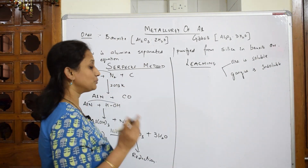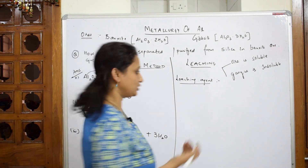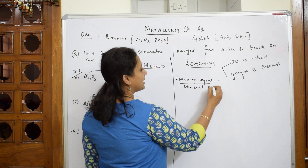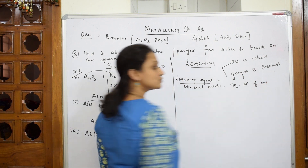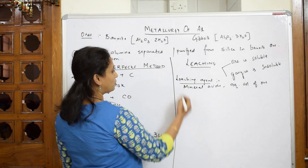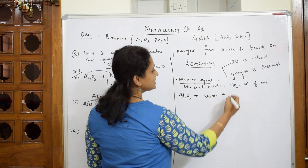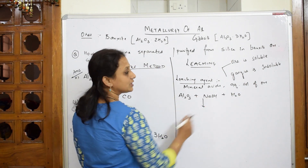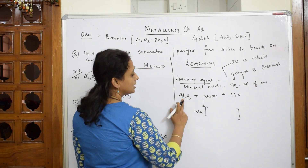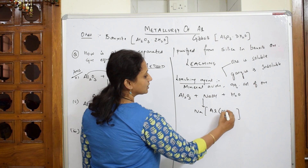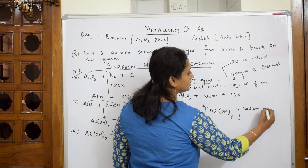For the leaching process, the most important thing required is a leaching agent. We can use mineral acids or an aqueous solution of that particular ore. We take the bauxite ore Al₂O₃ and fuse it with sodium hydroxide and water. This combines together and forms a coordinate covalent complex called sodium meta-aluminate, written as Na[Al(OH)₄].